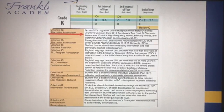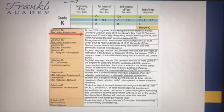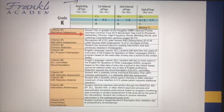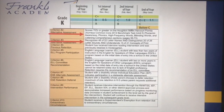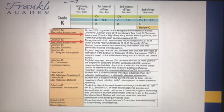A student who hasn't met that criteria will take a test from the Journeys curriculum. It's a test that focuses on phonemic awareness, phonics, and high-frequency words. If the student scores more than 70, the student will be promoted. Also, if the student recognizes 48 out of 52 letter names and is able to distinguish 20 out of 26 letters and sounds, and 15 out of 20 concepts of print, that can also be used for promotion.